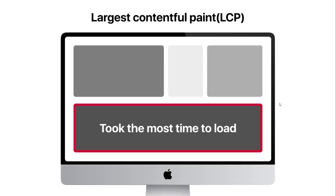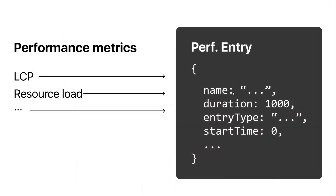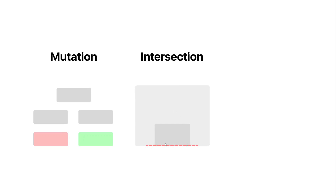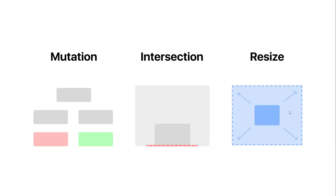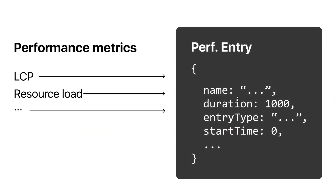For each of these metrics there will be a performance entry — an object that holds information related to a particular metric. This is just like any other entry we've seen in the previous observer videos. A Mutation Observer callback registers an entry anytime there is a change in the DOM tree. An Intersection Observer callback registers an entry anytime the target element intersects a container like a viewport. A Resize Observer callback registers an entry anytime the target element changes its size. Similarly, for different performance events, corresponding performance entries will be registered.